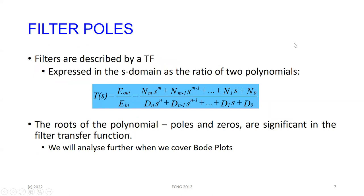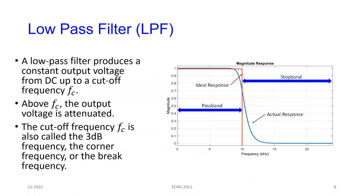Filters are described by a transfer function, which is basically a ratio of two polynomials. The roots of the polynomials — the zeros, which are roots of the numerator, and the poles, which are roots of the denominator — determine the frequency response. We will spend more time on that when we speak about Bode plots. Let's now look at the particular types of filters and their characteristics, then look at some circuits that actually implement that type of behavior.